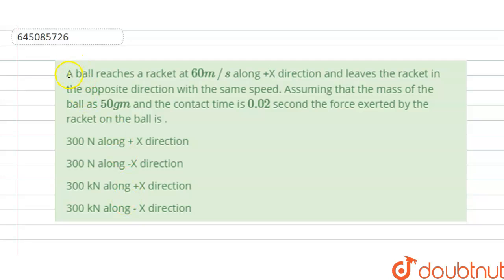Hello students, today our question is: a ball reaches a racket at 60 meter per second along the positive x direction and leaves the racket in the opposite direction with the same speed. Assuming that the mass of the ball is 50 gram and the contact time is 0.02 second, the force exerted by the racket on the ball is. We have to find the force here. ABCD options are given to us, so we have to find the correct option.